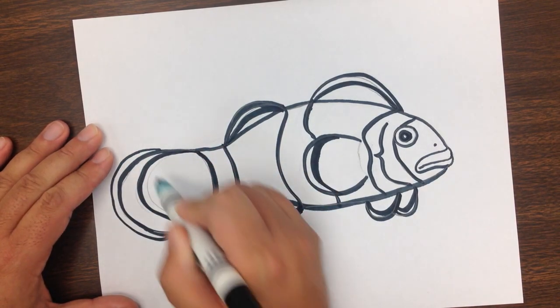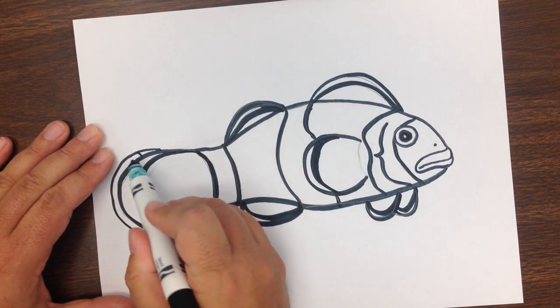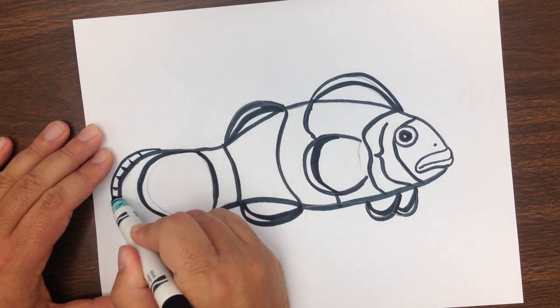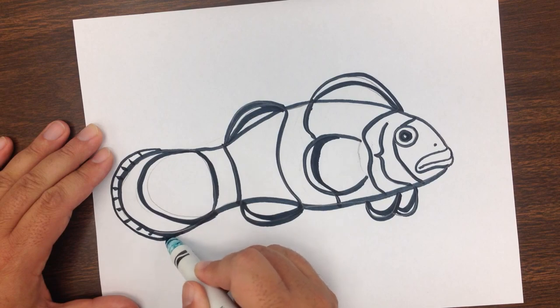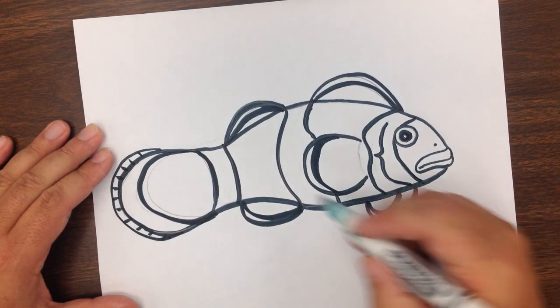And around each of these fins, I'm going to put this little transparent section with these little lines, which are the bones inside the fish's fin.